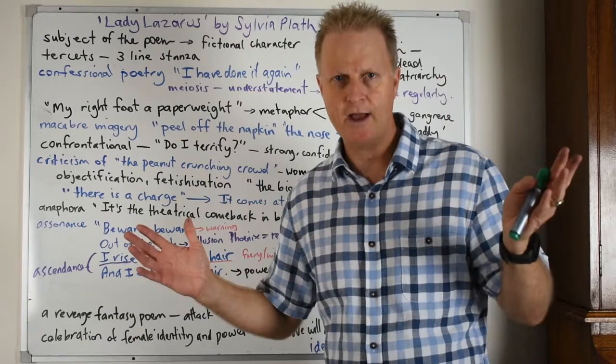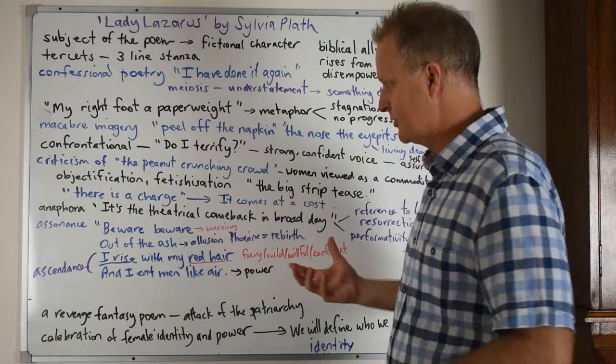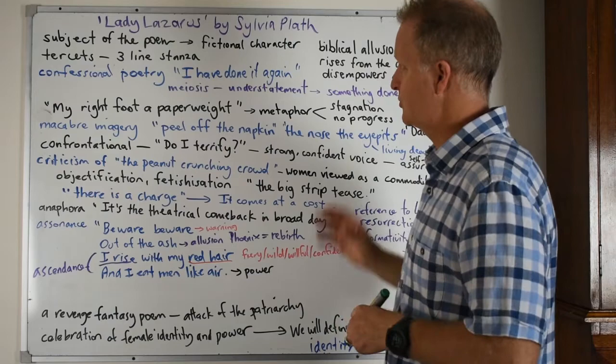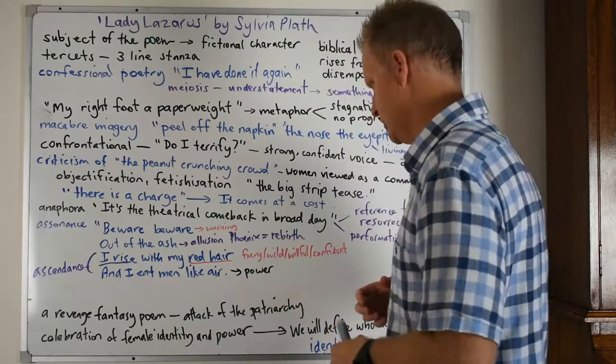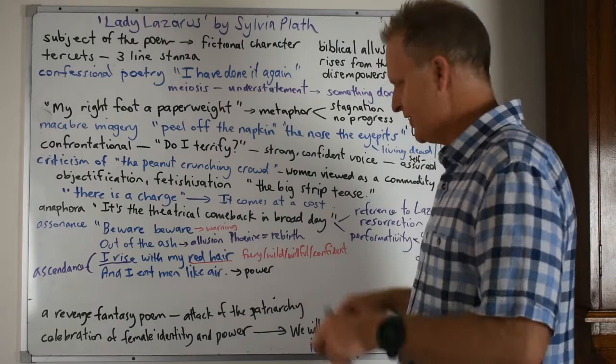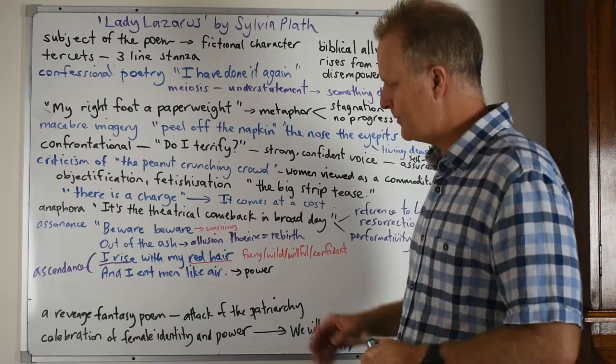So there's some interesting ideas to explore in this notion of what Plath is doing through this constructed persona of Lady Lazarus is revising the female identity and creating a new one. Essentially, I've read somewhere that this is a revenge fantasy poem, that it's the attack of the patriarchy, which I think is an interesting idea too. And certainly the poem is a celebration of female identity and power and that revision.